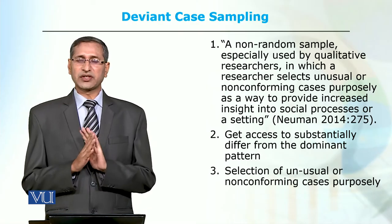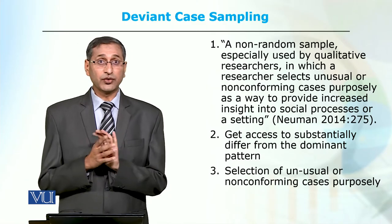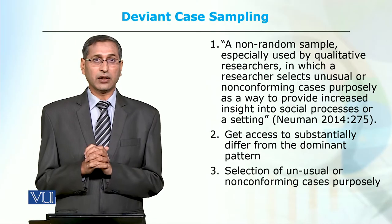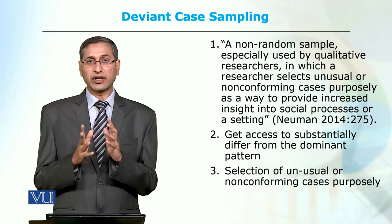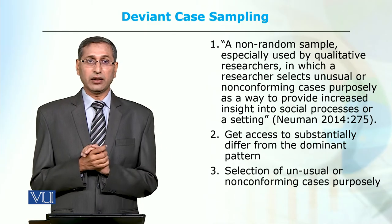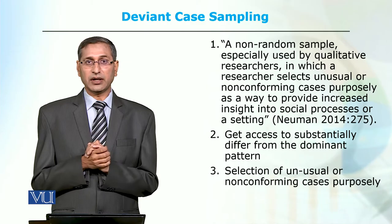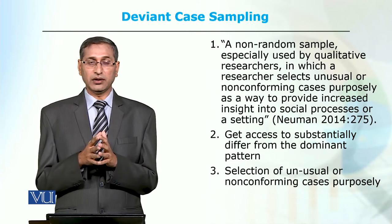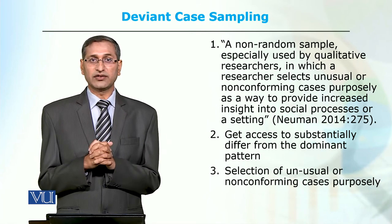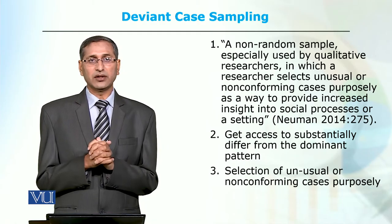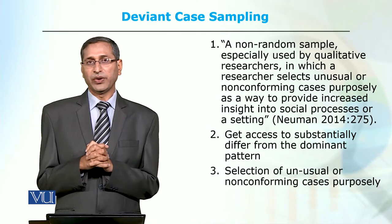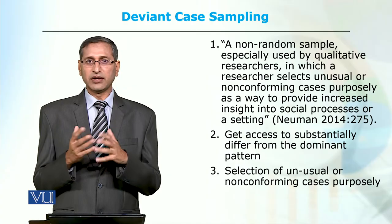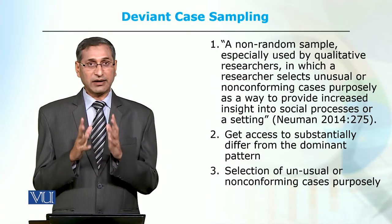بعض وقت بڑے extreme قسم کے cases ہوتے ہیں، مثلاً incest taboos کی violation کے cases ہو سکتے ہیں۔ Sometimes rape کے cases ہو سکتے ہیں جہاں نہ صرف ایک criminal rape میں involved ہو رہا ہے بلکہ murder بھی کر رہا ہے۔ جیسے سیالکوٹ میں motorway والا قصہ - اس میں نہ صرف criminals نے پیسے لوٹے اور rape کیا، but they also intended to commit attempt murder as well.